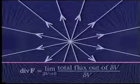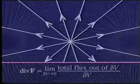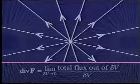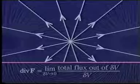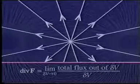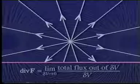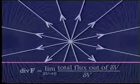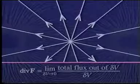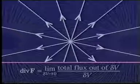Let's now summarize the main points. Given a vector field f, we can derive a scalar field called the divergence of f, or div f. If the field lines of f are continuous in a region, the divergence div f is zero in that region. The divergence is non-zero only in regions where field lines start or end.